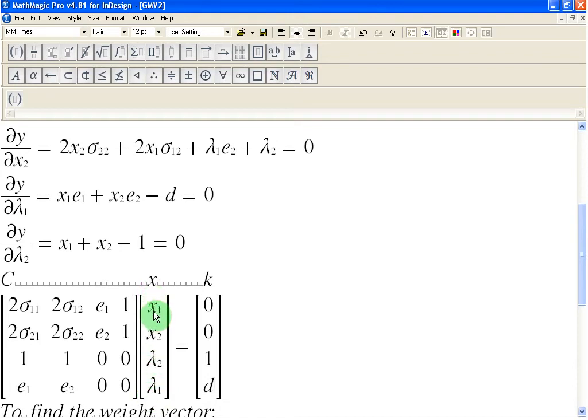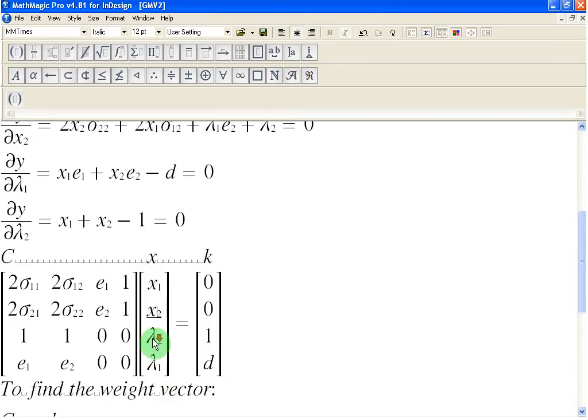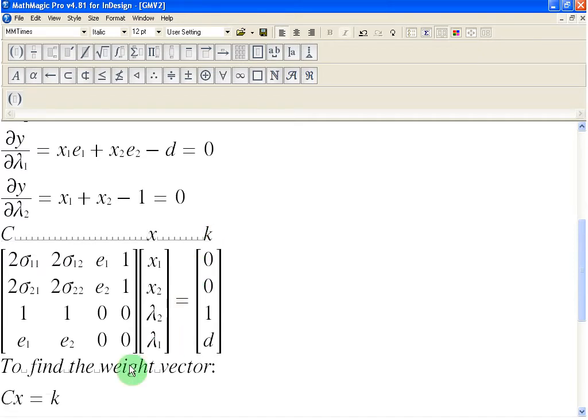I want to find out the values of X1 and X2. So, what I observe here is that I am taking a product between C and X, and that is yielding this column vector K. So, that is what I write here. C times X is equal to K.